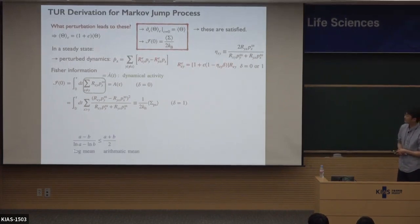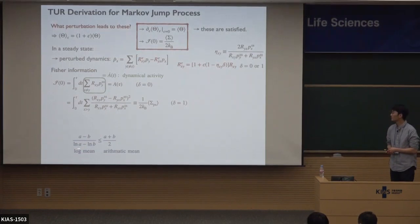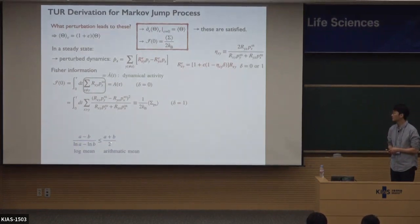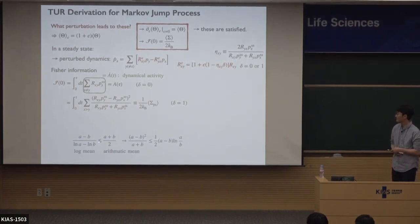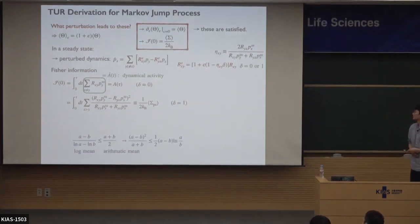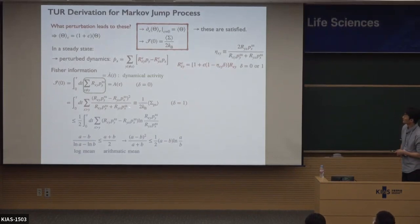Now I will use a famous inequality called the log mean inequality. The left side is the log mean and the right side is the arithmetic mean, and we can show that the log mean is always smaller than or equal to the arithmetic mean. By adjusting this slightly, and letting one term be a, another be b, and another be a plus b, we apply this inequality to get a minus b times the logarithm of a over b.